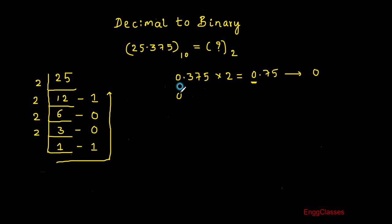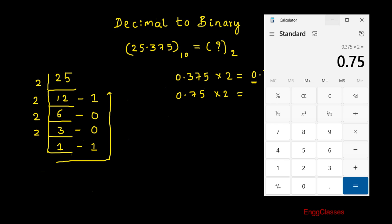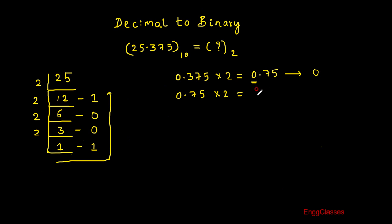Next, consider the leftover fractional part 0.75 and multiply by 2. Using the calculator, 0.75 into 2 gives 1.5 as the answer. At the integer part I have 1, so I write 1 here. The leftover fractional part is 0.5.